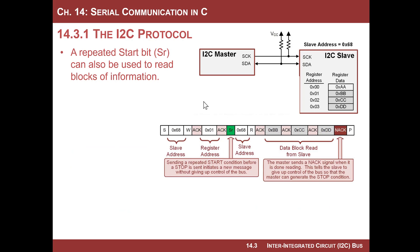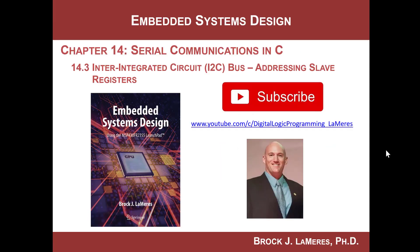You can also do the block read with a repeated start bit. The first part sets the register address with a write message: start, slave address, write; ACK; register address; ACK. Then instead of a stop, the master sends another start, beginning the second message: slave address, read; slave ACKs and starts sending — BB, master ACKs; CC, master ACKs; DD, master sends NAK and stop. That's how you conceptually do addressing slave registers in I²C.